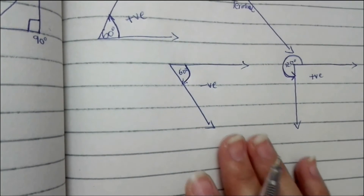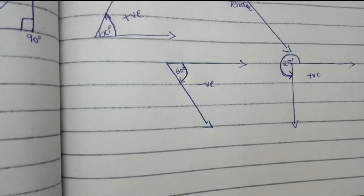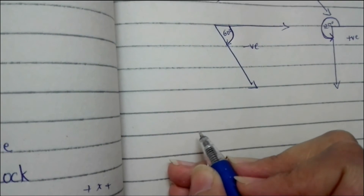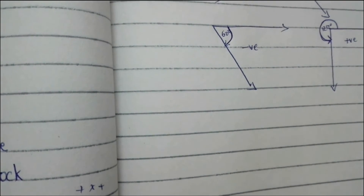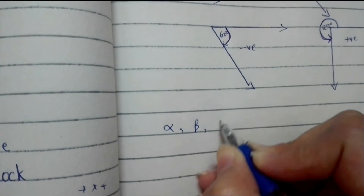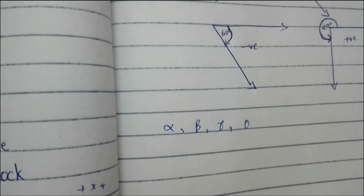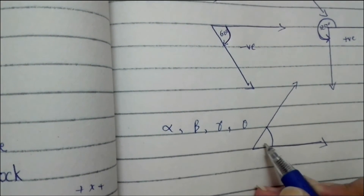To represent angles, we use the Greek symbols alpha, beta, gamma, and theta. These are all Greek letters used as symbols to represent any angle. For example, if you have a figure with two rays forming an angle, we represent that angle as theta.